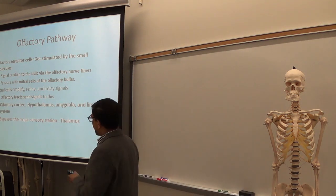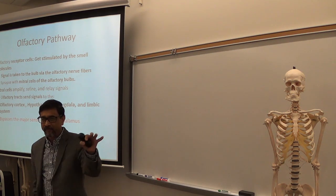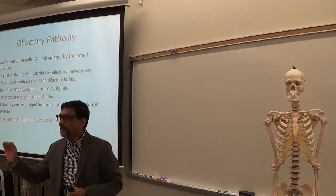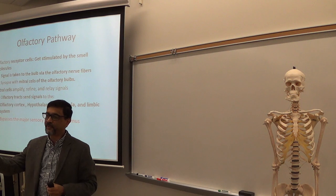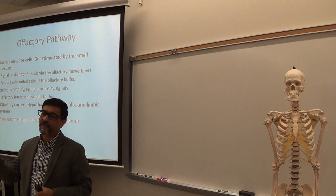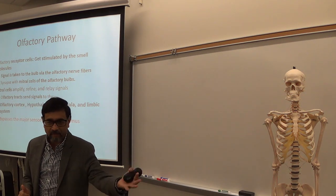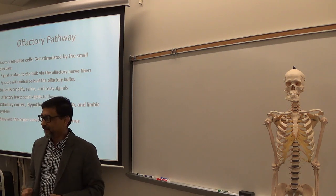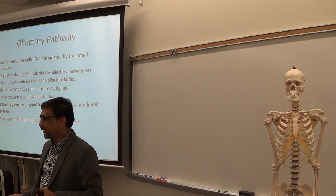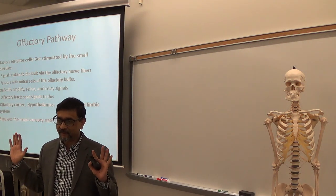Which brain structures receive the signal from the olfactory tract? Four structures: olfactory cortex, hypothalamus, amygdala, and limbic system. Different structures perform different functions. The olfactory cortex gives you the perception of smell — identifying whether it is orange, banana, or mango. That is the immediate smell perception.